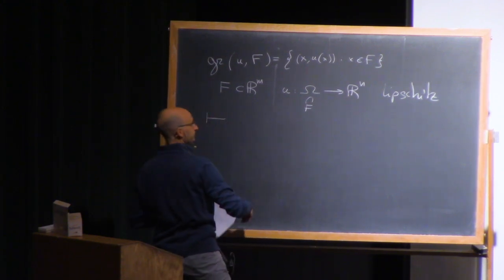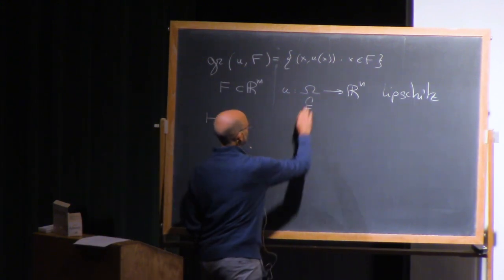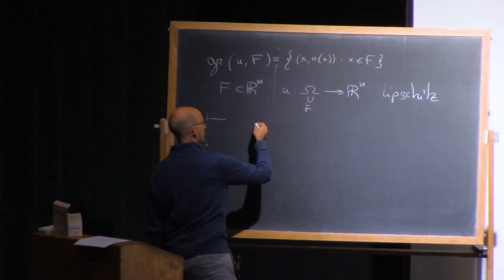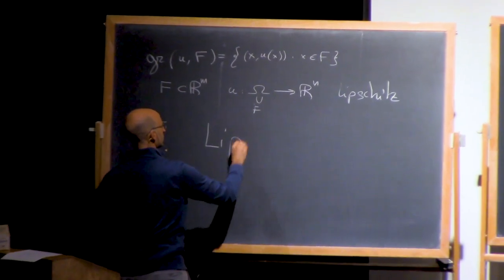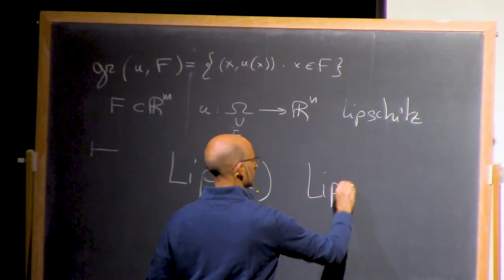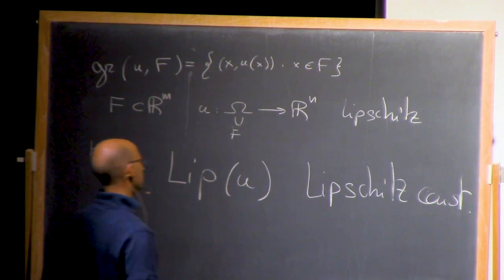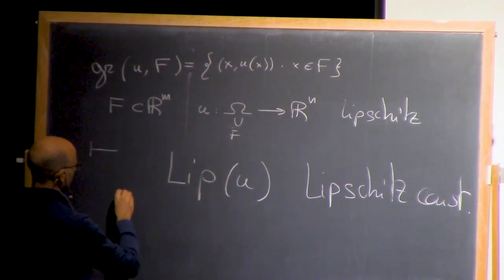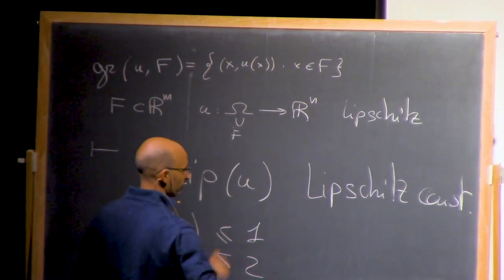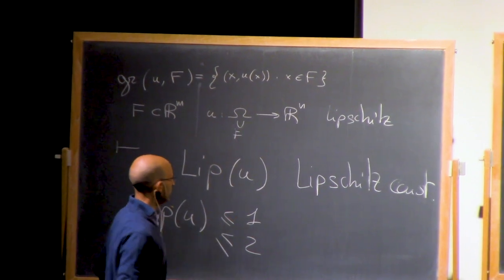First of all, let us make a very simple observation. We will always look at functions which have a certain precise Lipschitz bound. We will use this notation for the Lipschitz constant, and in all our assumptions the Lipschitz constant of u will be either bounded by one or bounded by two. The important point is that it's always under control with some uniform bound.